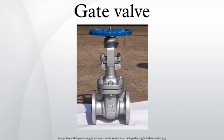A partially open gate disc tends to vibrate from the fluid flow. Most of the flow change occurs near shut-off, with a relatively high fluid velocity causing disc and seat wear and eventual leakage if used to regulate flow.